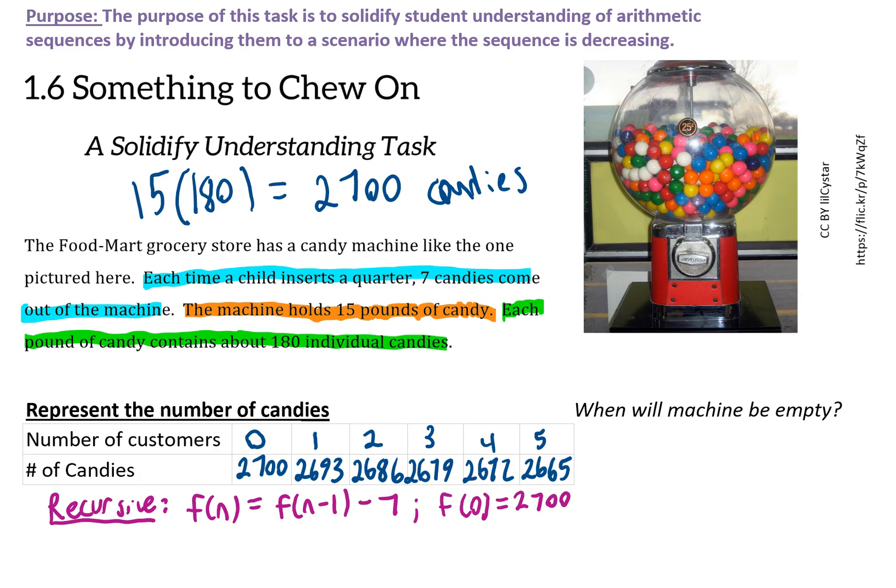For an explicit rule, I could write f(n) = 2,700 - 7n, where 2,700 is the starting amount.